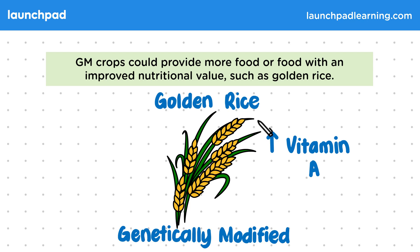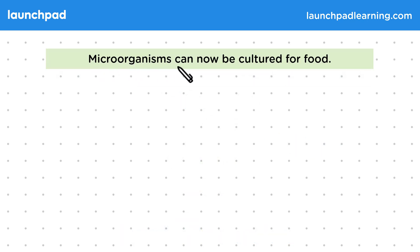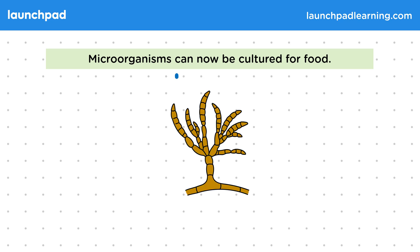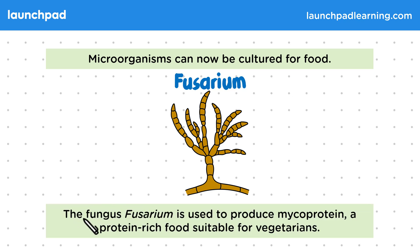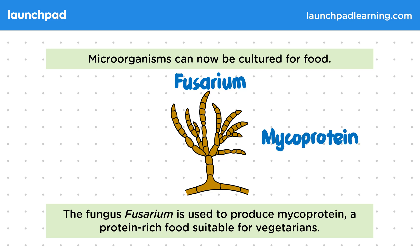Microorganisms can now be cultured for food. The fungus fusarium is an example you need to know about for the exam. It is used to produce mycoprotein, a protein-rich food suitable for vegetarians. You can buy mycoprotein at a supermarket — a common brand you may be familiar with is Quorn, but you don't need to know this for the exam.